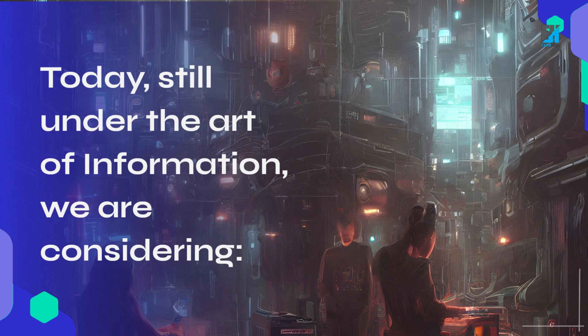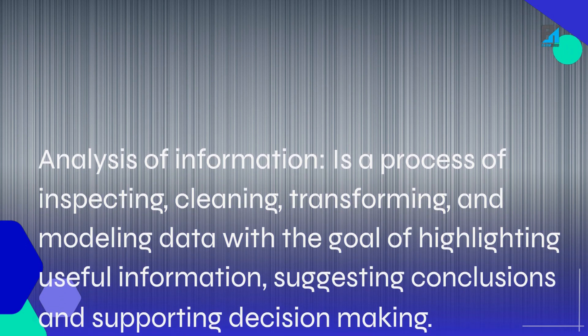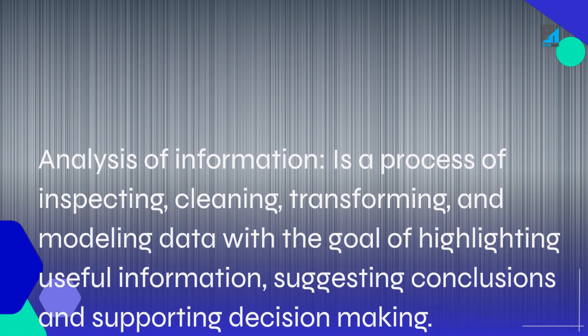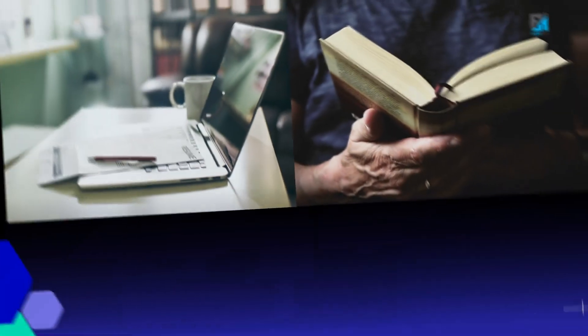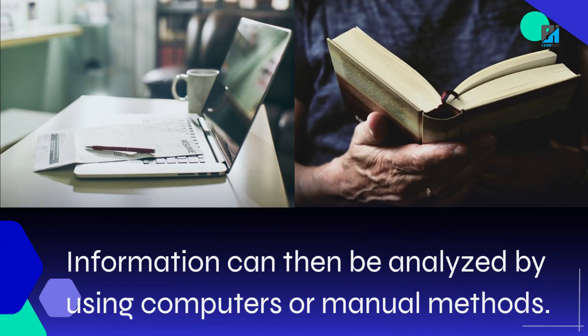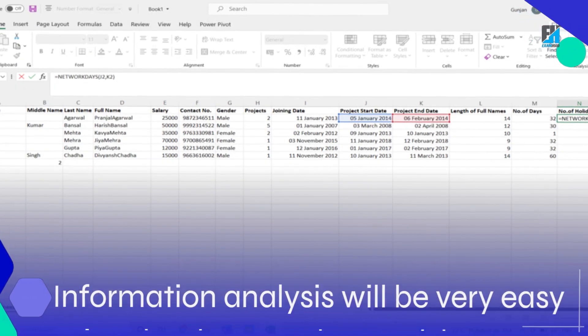Today, still under the art of information, we are considering. Analysis of information is a process of inspecting, cleaning, transforming, and modeling data with the goal of highlighting useful information, suggesting conclusions, and supporting decision-making. Information can be analyzed by using computers or manual methods. Information analysis will be very easy using databases and spreadsheets.